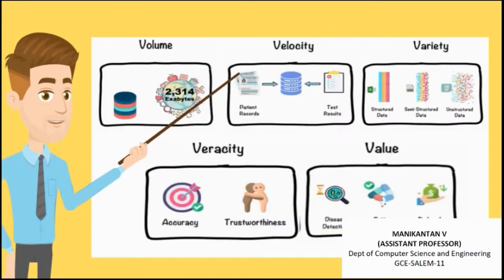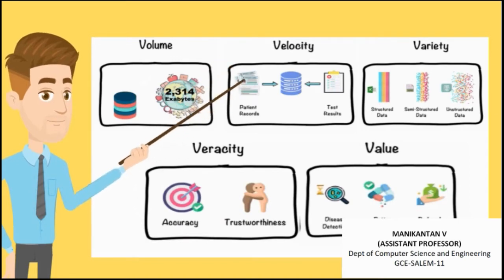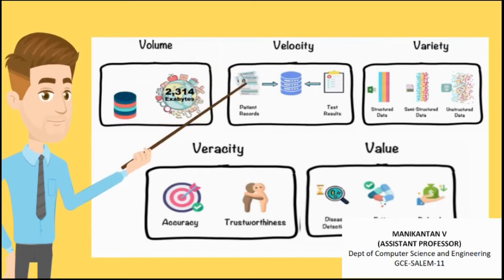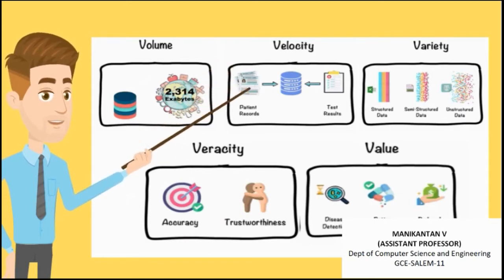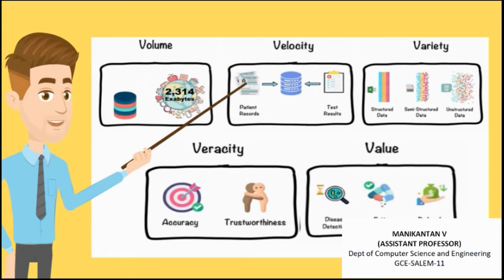Let us understand this with an example from the healthcare industry. Hospitals and clinics across the world generate massive volumes of data — 2,314 exabytes of data are collected annually in the form of patient records and test results. All this data is generated at a very high speed, which attributes to the velocity of big data. Variety refers to the various data types such as structured, semi-structured, and unstructured data — examples include Excel records, log files and x-ray images. Accuracy and trustworthiness of the generated data is termed as veracity. Analyzing all this data will benefit the medical sector by enabling faster disease detection, better treatment and reduced cost. This is known as the value of big data.